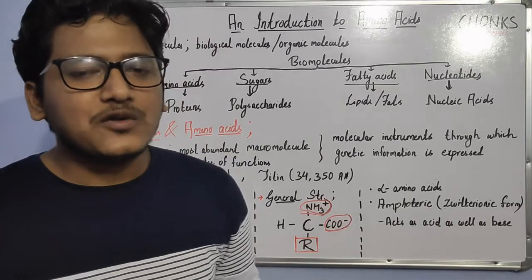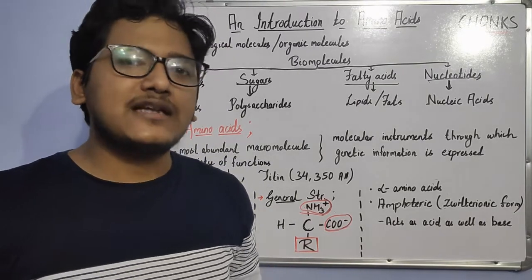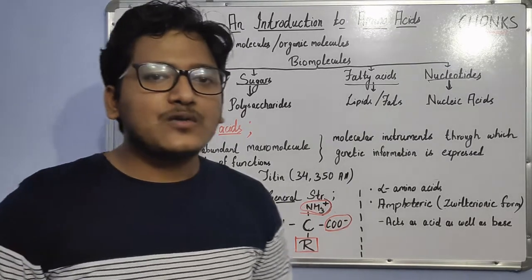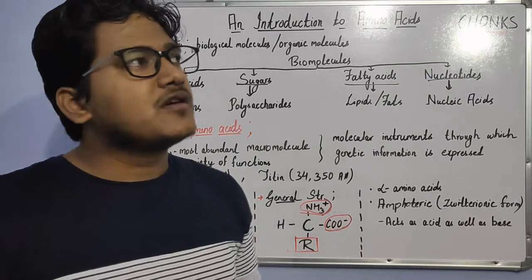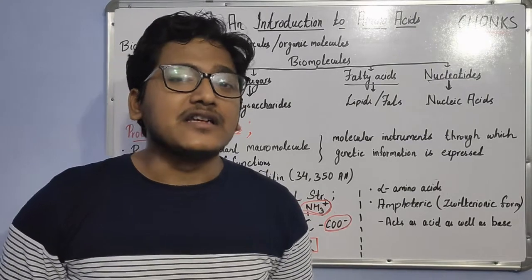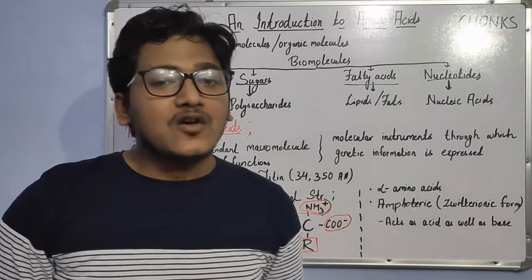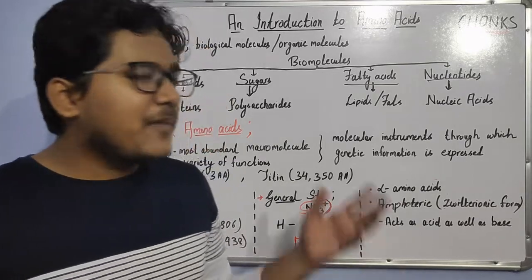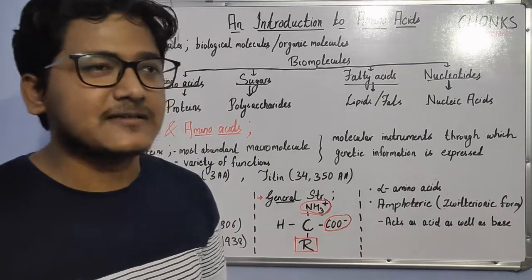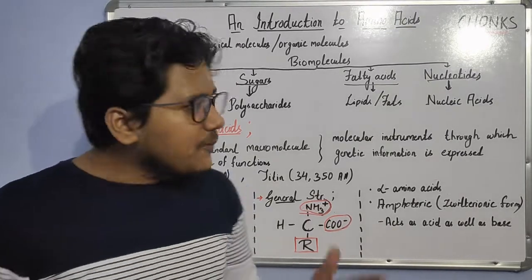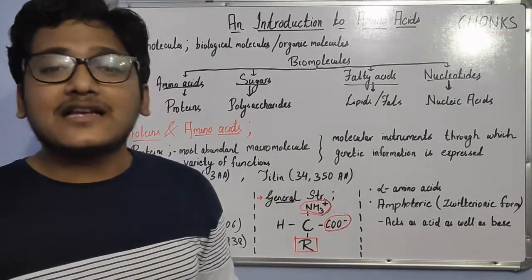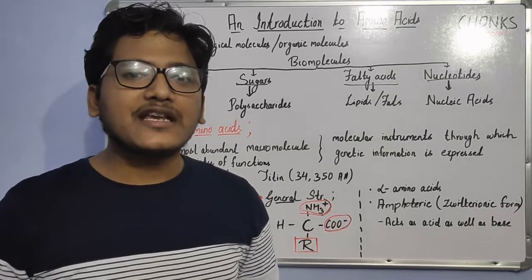Life started, as we know, around 4.5 billion years ago. Around that time, the environment favored the formation of biomolecules in the presence of sunlight as well as other inorganic materials. It is quite interesting to know how life actually began from non-living things. These biomolecules are the non-living things from which life came into existence, because if we break down biomolecules, they are made up of atoms and molecules which are non-living or inanimate by nature.